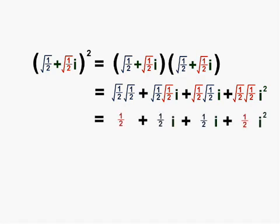Also, we can notice that i squared is of course minus 1, so the half at the start cancels with minus half at the end, leaving two terms of a half i. These add together to of course give us i.